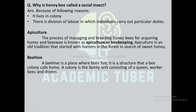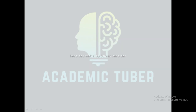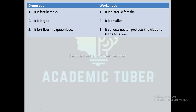A beehive is a place where bees live — a structure that a bee colony calls home. A colony is the family unit consisting of a queen, worker bees, and drones. Molting is the shedding of an outer layer or covering and the formation of its replacement. The larva of a honeybee molts four to five times. Differences between drone bee and worker bee: the drone is a fertile male whereas the worker bee is a sterile female; the drone is larger while the worker bee is smaller. The function of the drone is to fertilize the queen, while the worker collects nectar, protects the hive, and feeds the larvae.